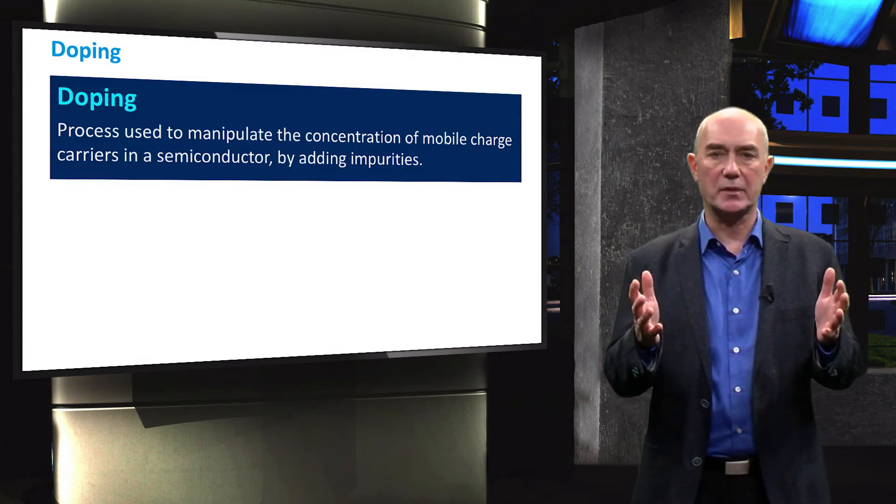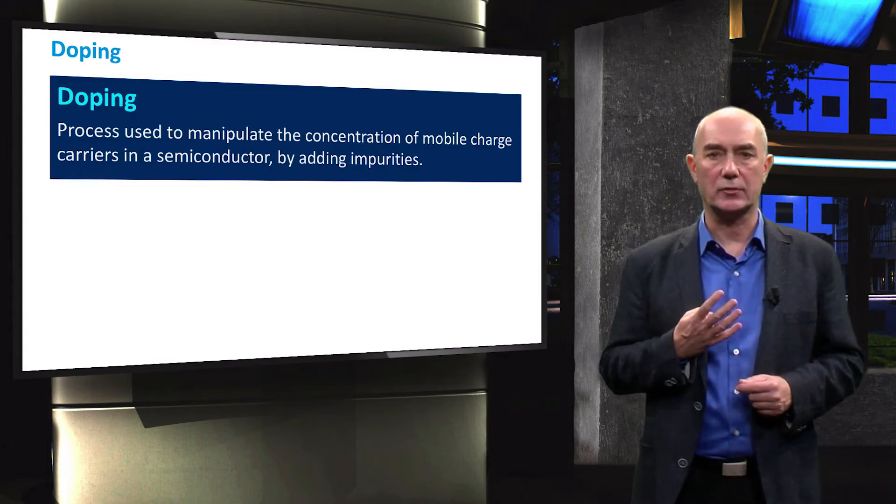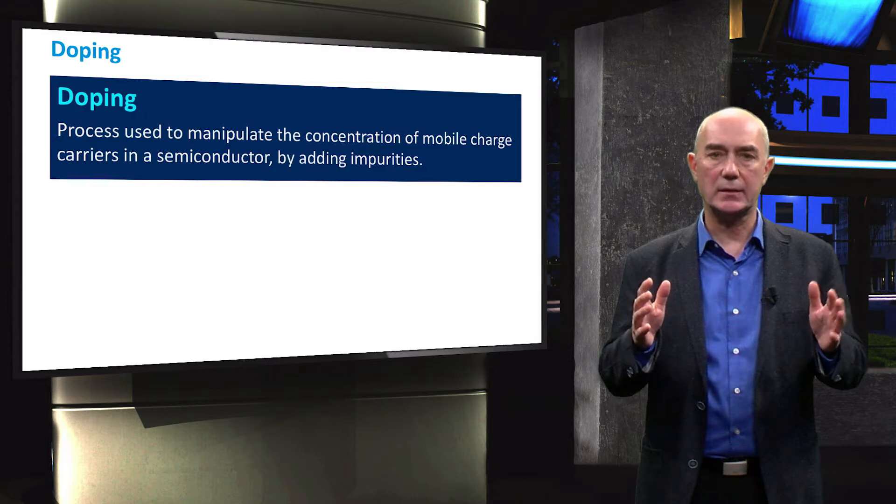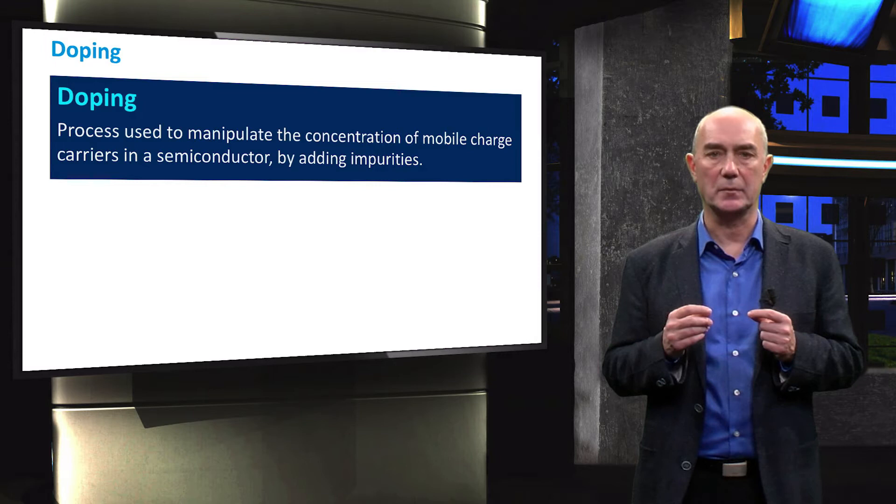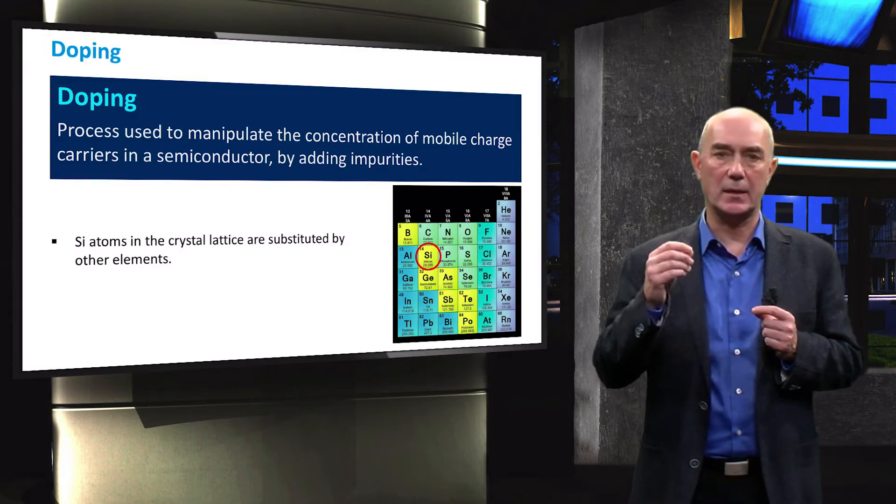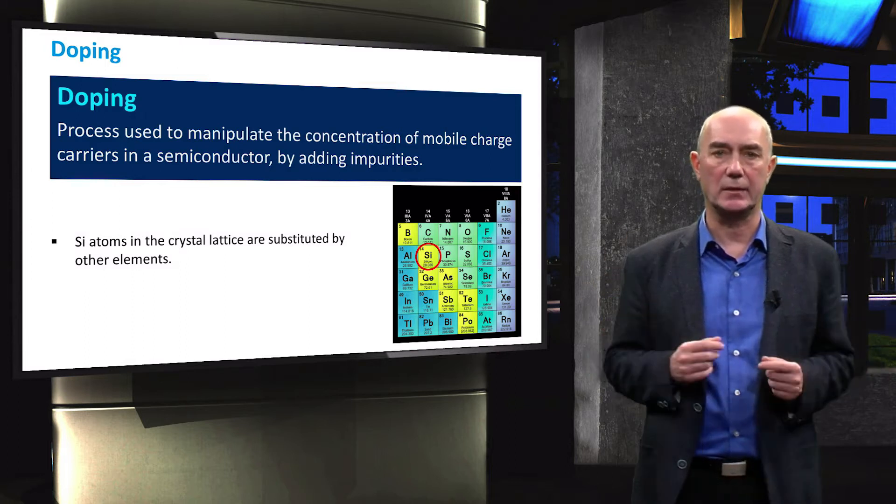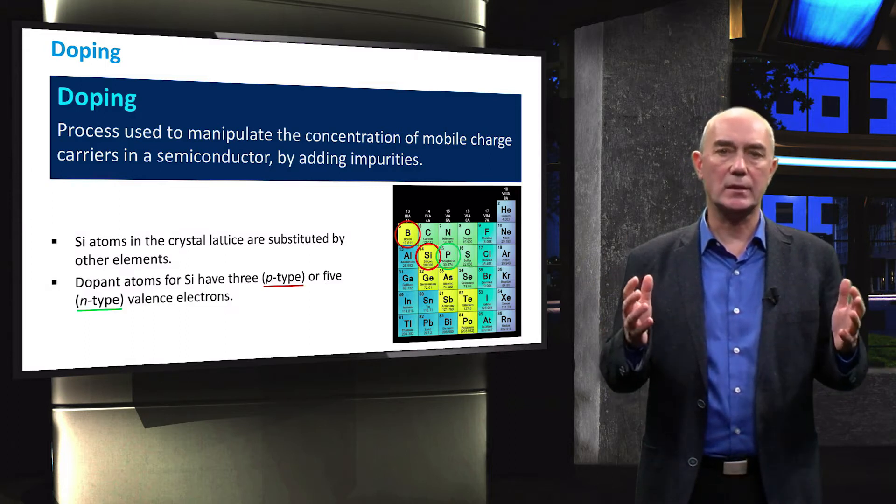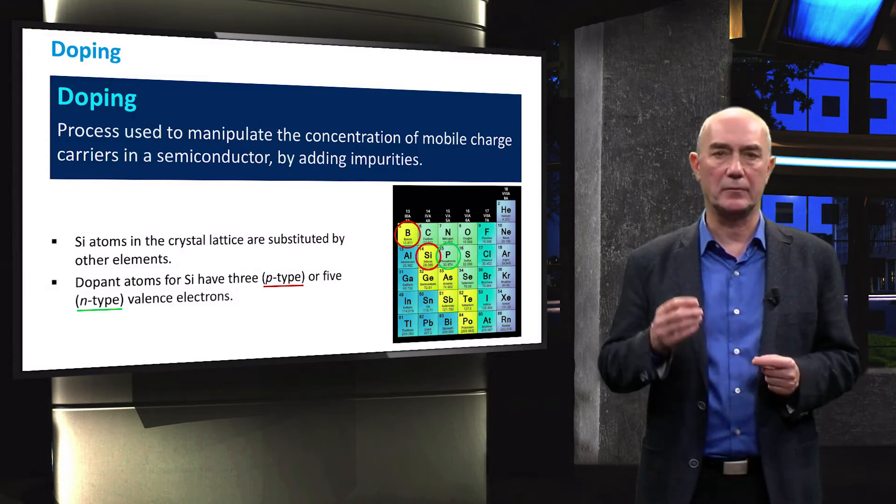Let's take the example of silicon. Silicon has four valence electrons. In a silicon lattice each atom is bonded covalently to four other silicon atoms. We can take that silicon lattice and substitute a small amount of silicon atoms with different atoms. This is commonly done with atoms of two different elements, boron and phosphorus.